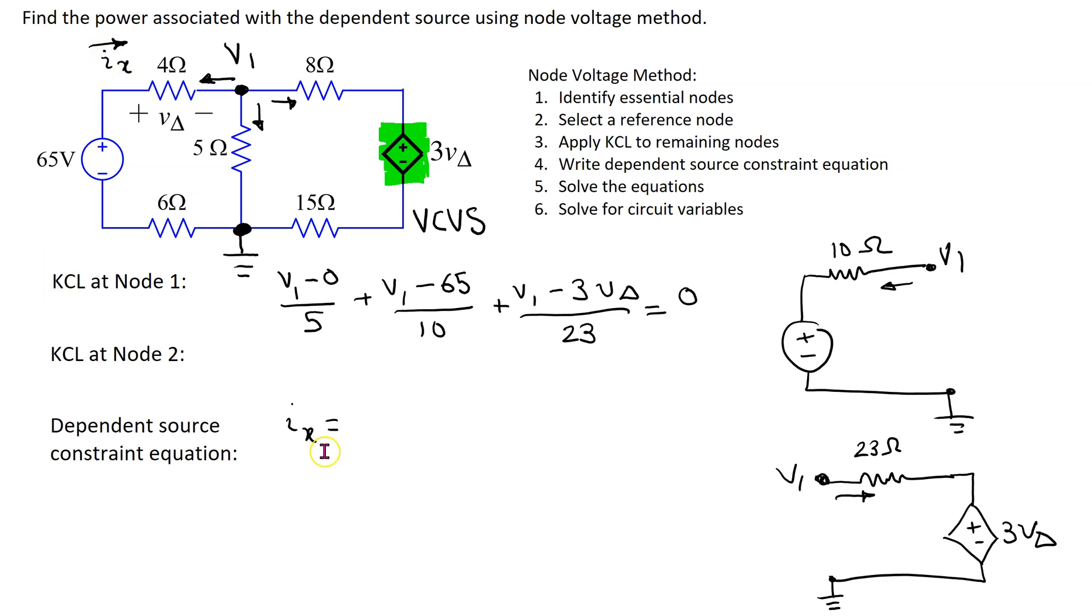Then this IX will be 65 minus V1 over 10 and then I just need to apply Ohm's law to this resistor. So that means V delta is equal to 4 times IX is equal to 4 times 65 minus V1 over 10.